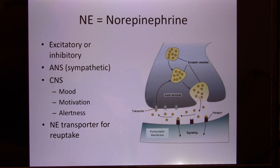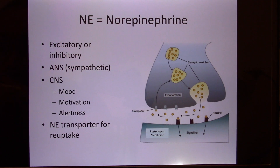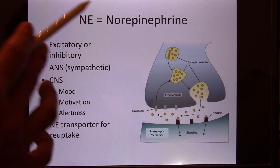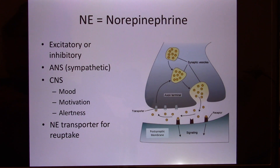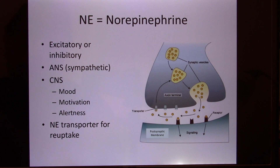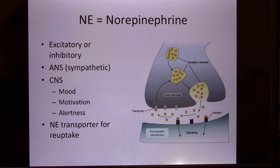The next neurotransmitter is norepinephrine. These neurotransmitters can be excitatory or inhibitory based on the receptor. We will discuss this more with the autonomic nervous system — the sympathetic nervous system uses norepinephrine. In the brain, norepinephrine is also associated with mood, motivation, and alertness. Some antidepressants work on this system and can affect your mood.